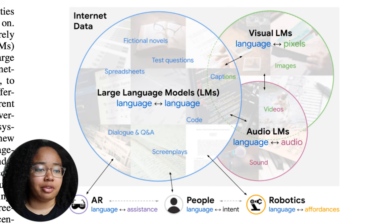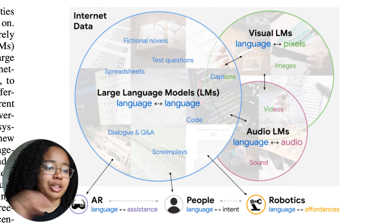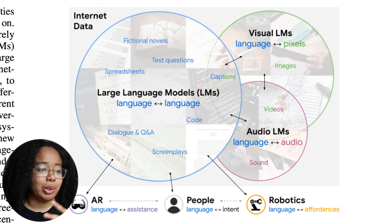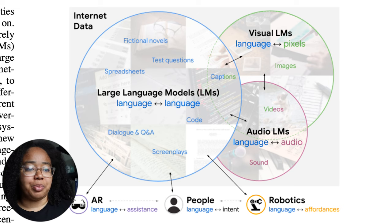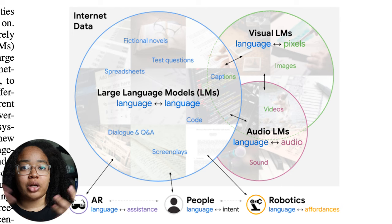When it comes to Socratic Models in this particular example, we're looking at large language models — models that map text to text — as well as video language models that map video to text, and audio language models that map audio to text. Looking at the first figure, which is a really useful visual explanation, we have three overlapping circles: large language models that map language to language, visual language models that map language to pixels, and audio language models that map language to audio. The common knowledge between these three models is language — things like captions, video descriptions, and transcribed audio.